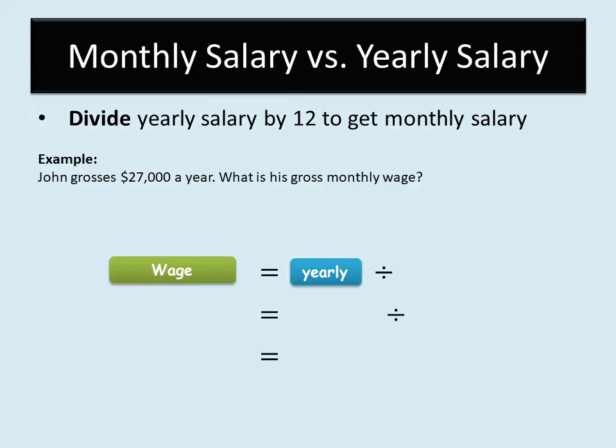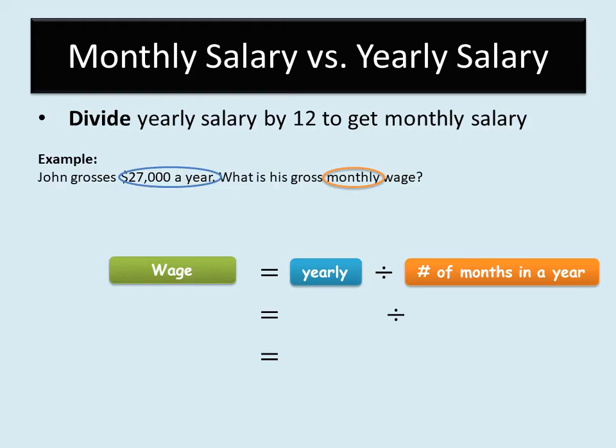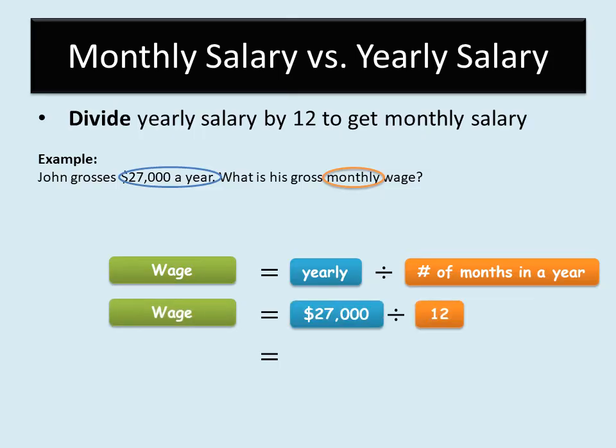For the year he gets $27,000. You want to know how much he gets every month, so we divide the yearly salary by 12 to get how much he would get within one month. The yearly salary is $27,000, and dividing that by 12 gives us a final answer of $2,250. So every month John is getting $2,250, and that will accumulate to $27,000 over one year.